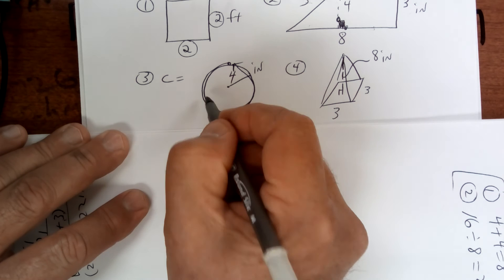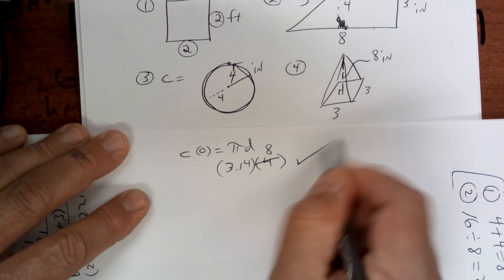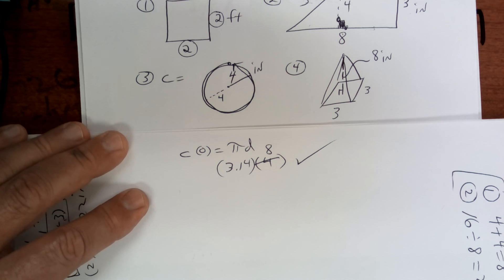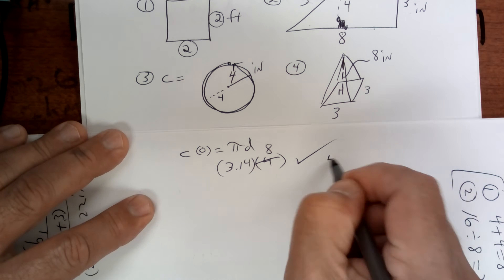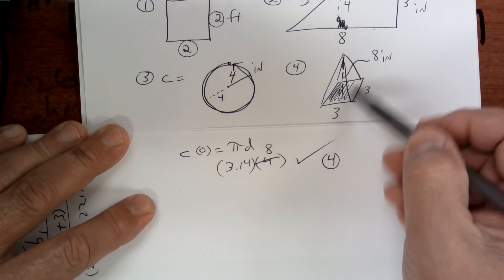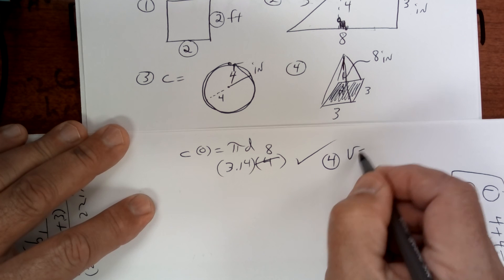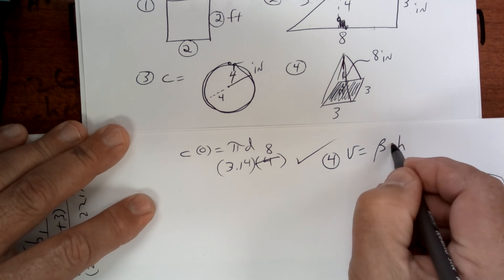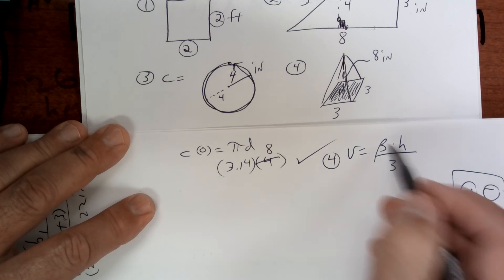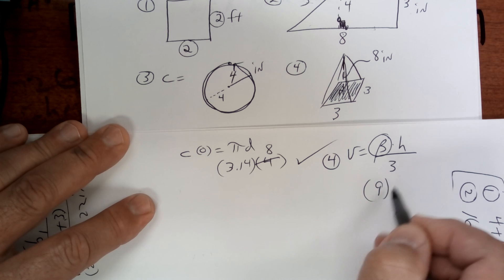Number 4 is the volume, and it's big B - the bottom - times the height divided by 3. So put volume equals big B times the height divided by 3. So the base is a square, 3 times 3 is 9, the height of this thing is 8. It's a pyramid, it's a square pyramid.